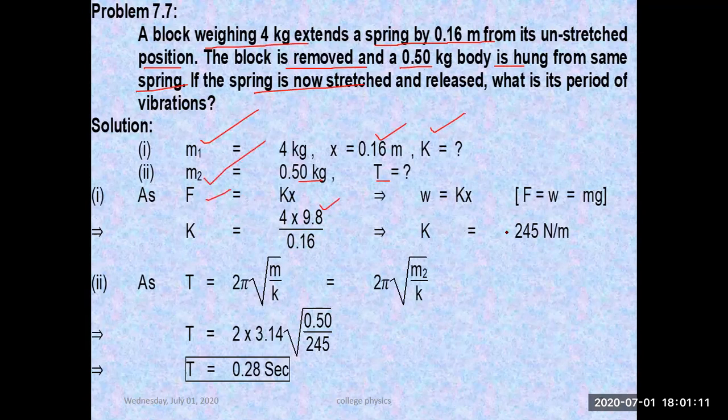You have calculated spring constant K. But in case of time period, when the mass is connected with the spring, the time period formula is T = 2π√(m/K). Here mass is m2. You have already calculated value of K. We did it deliberately because on the basis of this data you will calculate the K value.